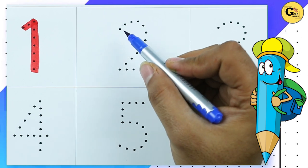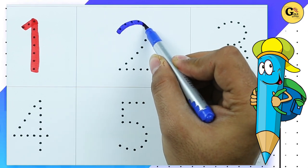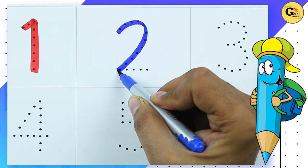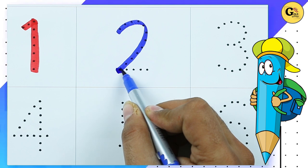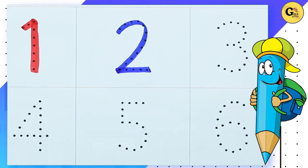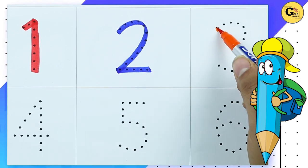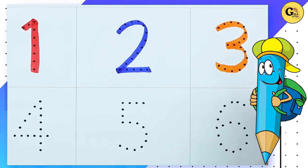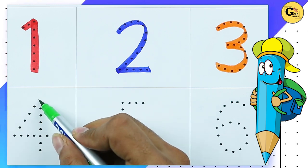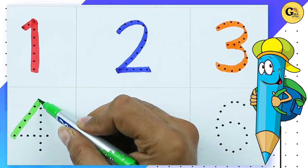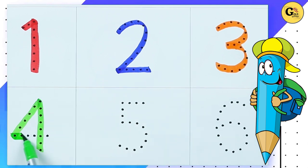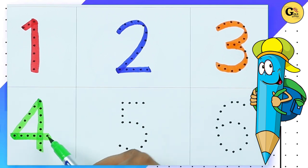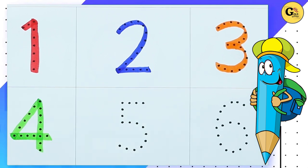Number two — it's two with blue color. It's number three — yes, three is with orange color. It's number four with green color.